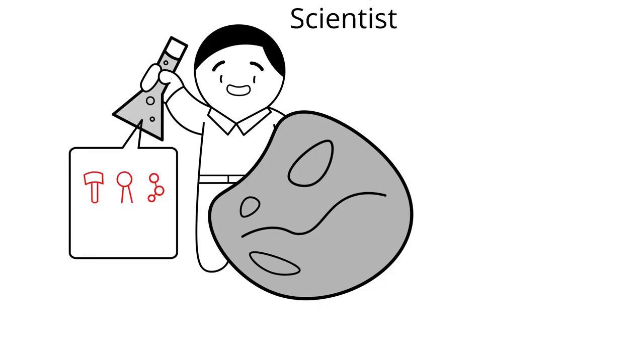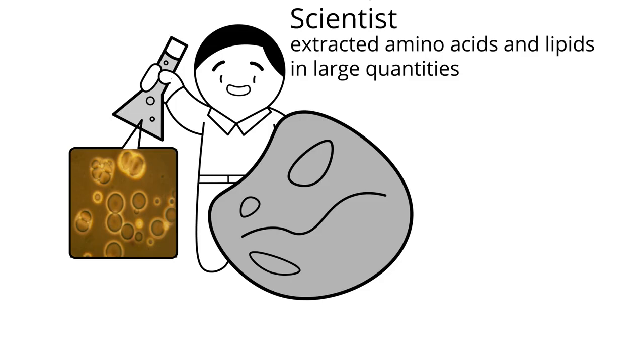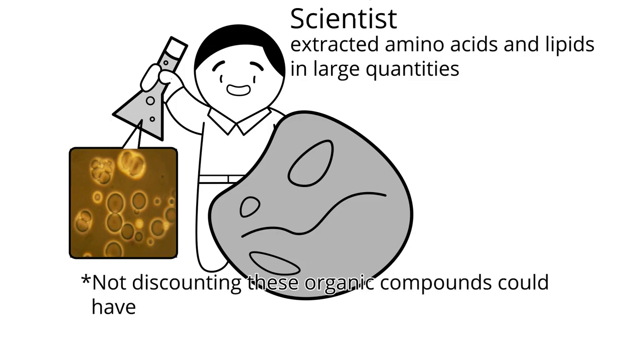As it turns out, it contains thousands of ancient organic compounds, including the amino acids and lipids in large enough quantities, such that small bubble-like structures called vesicles form when astrobiologists like Professor Dave Diemer dissolve them in water. Of course, we are not discounting the possibility that some of these organic compounds could have spontaneously formed on Earth over billions of years.